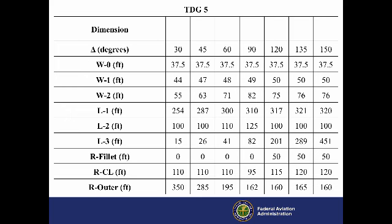For each TDG, tables in the AC, like the ones shown here, show the values for these widths, lengths, and radii for each standard delta.